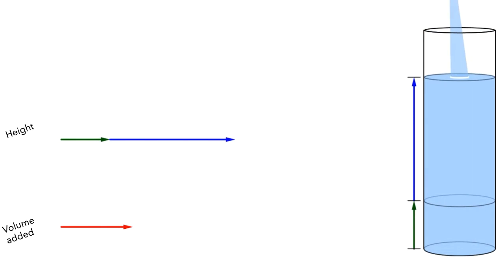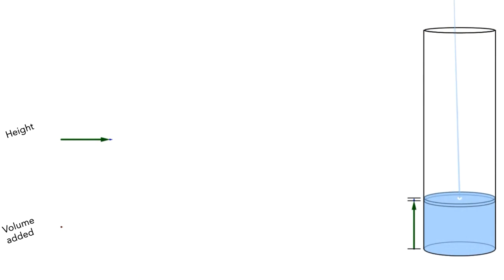Let's rewind this to the start of the pouring. I'll show this animation again. As the animation plays, think about how the height — the length of the blue arrow — and the added volume — the length of the red arrow — are changing with respect to each other.